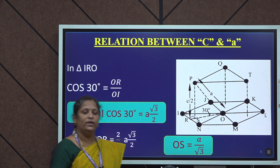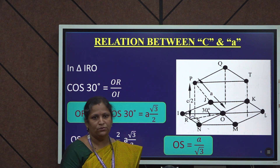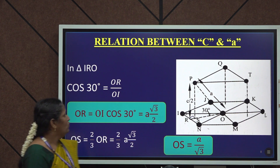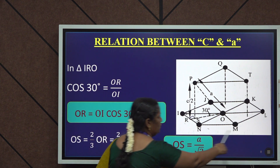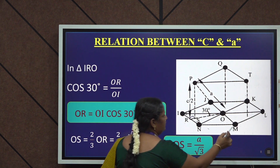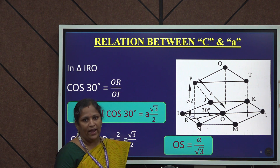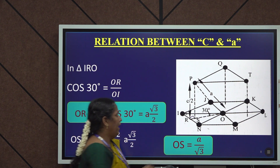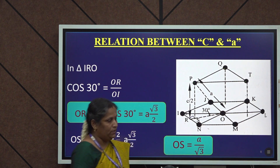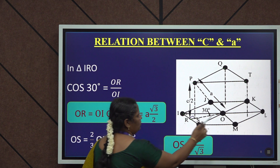Before calculating the volume of the unit cell, let us establish a relation between the height C and the lattice parameter A. We consider the lower plane of the hexagonal lattice, where I, J, K, L, M, N represent the corner atoms positioned at the lower hexagonal plane. We also consider the three internally positioned atoms P, Q, T. To begin, we consider the triangle I, R, O.